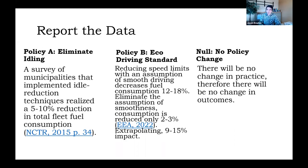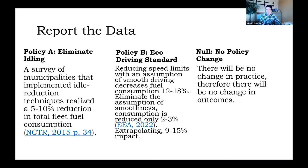I found data suggesting that idle reduction practices can reduce fuel usage by 5% to 10% across a fleet, with a citation of a study that determined this. Policy B was a little harder — I had to extrapolate. I found another study suggesting that slowing down overall, combined with eco-friendly smooth driving inputs, reduces fuel consumption by 12% to 18%. But that same study found that if you eliminate the eco-friendly smooth driving, the reduction from speed alone is only 2% to 3%.